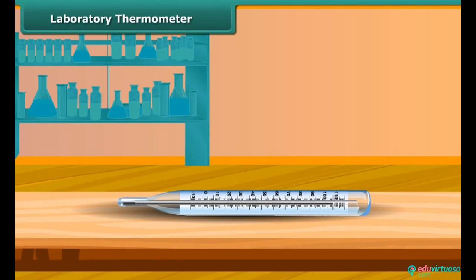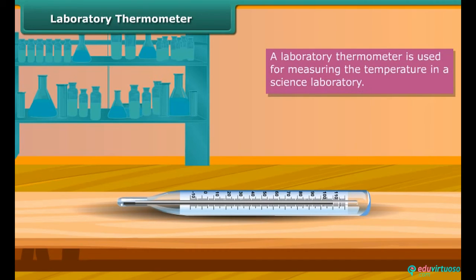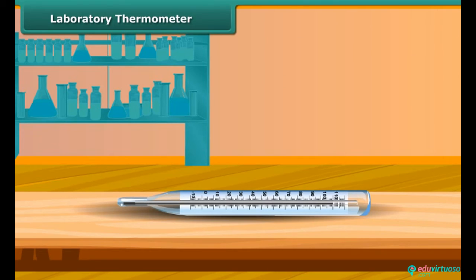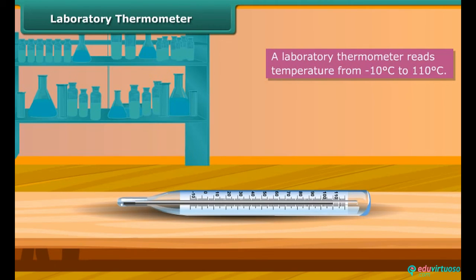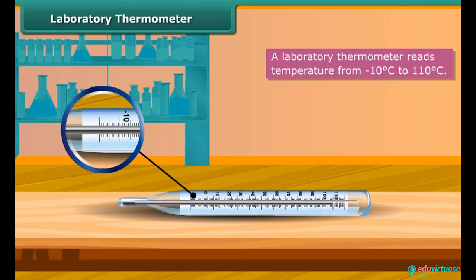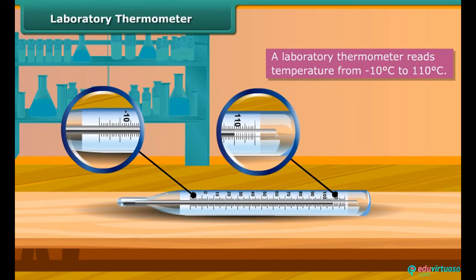A laboratory thermometer is used for measuring temperature in a science laboratory. It is similar to a clinical thermometer but is long and narrow. A laboratory thermometer reads temperature from minus 10 degrees Celsius to 110 degrees Celsius.